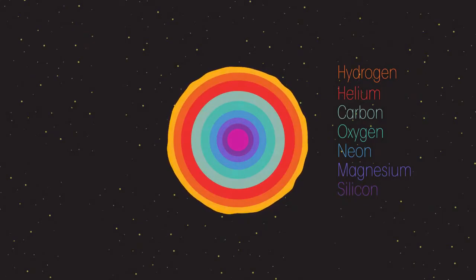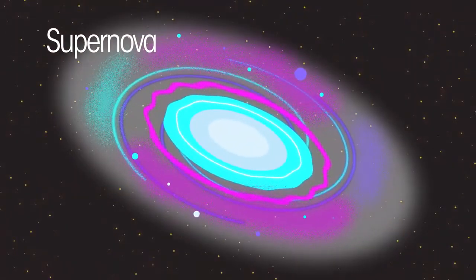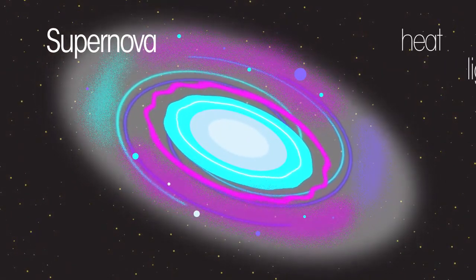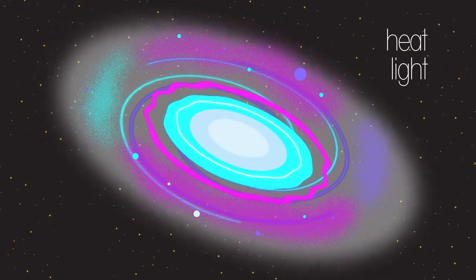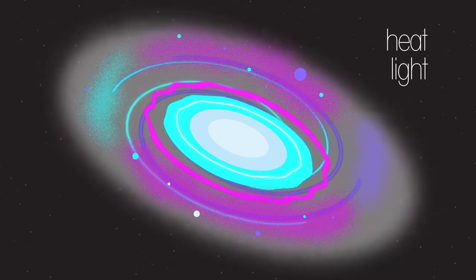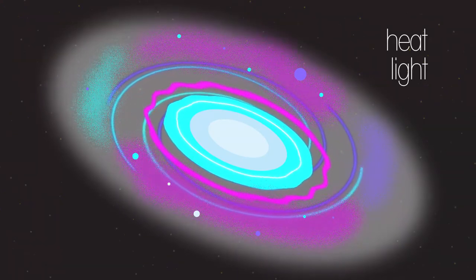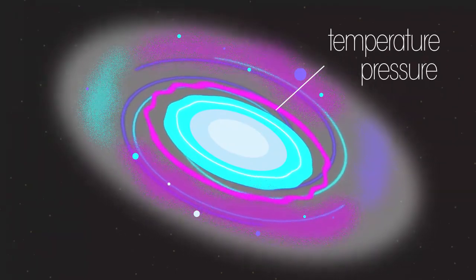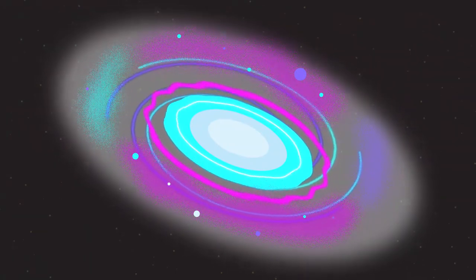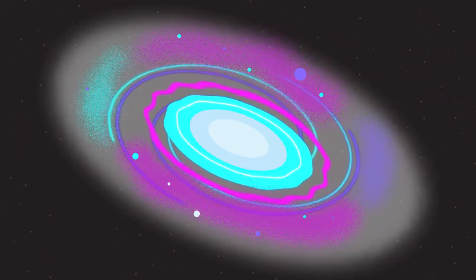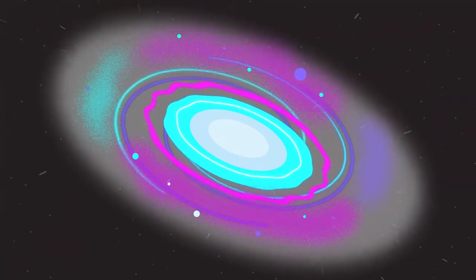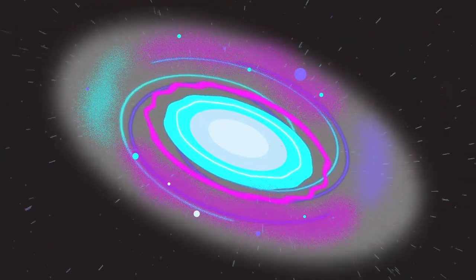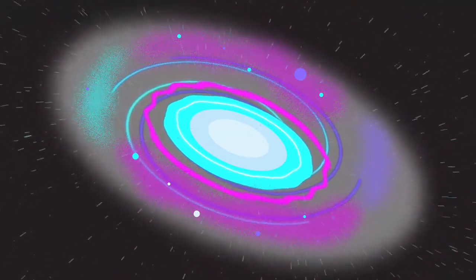Eventually, fusion stops, resulting in the collapse of the super red giant. The shockwave created triggers an explosion — a supernova — producing a lot of energy in the form of heat and light, which can outshine all the other stars in the galaxy for several weeks. The extremely high temperature and pressure inside a supernova enables the fusion process to create all of the elements in the periodic table heavier than iron. The supernova distributes these throughout the universe, so that means we're all made of star dust.